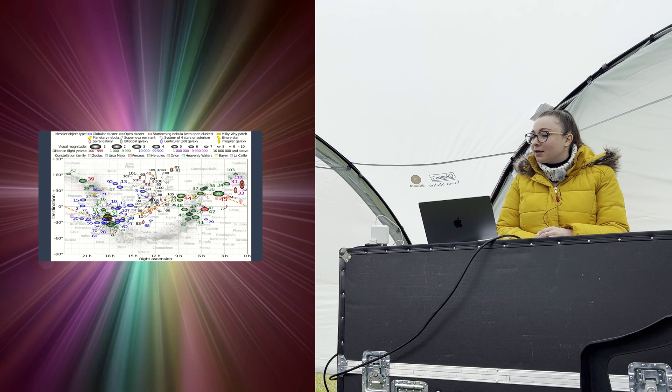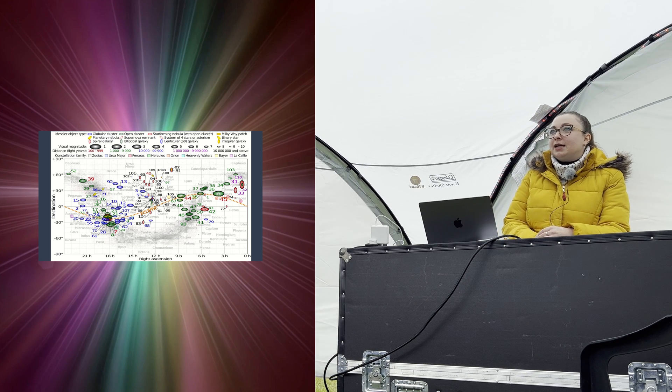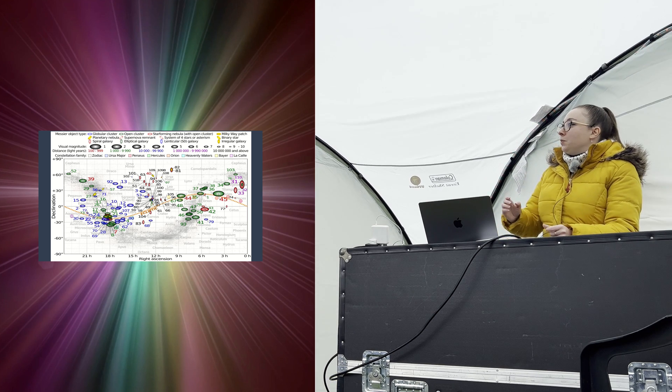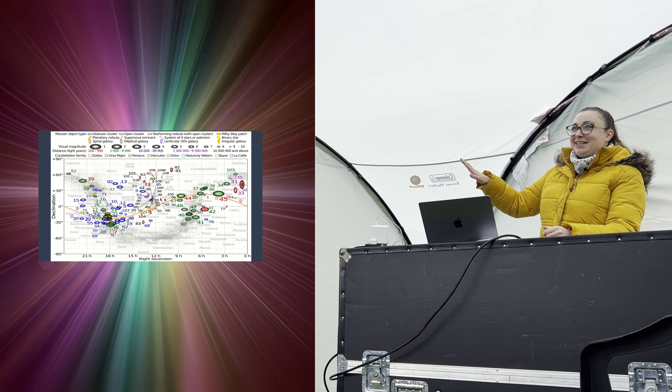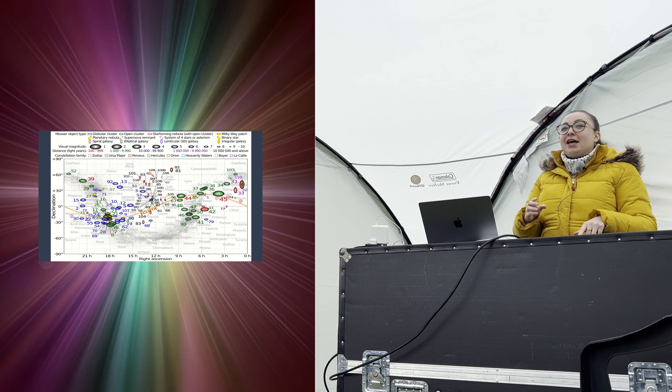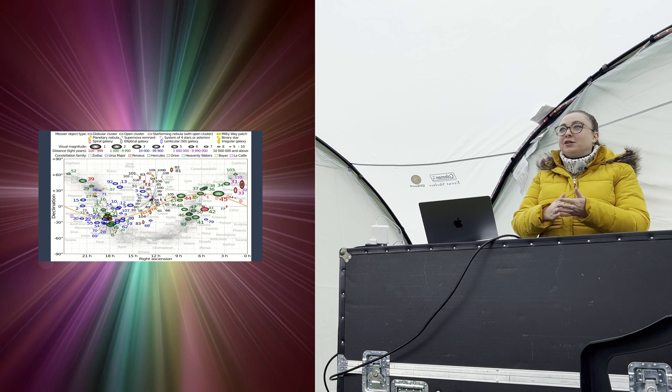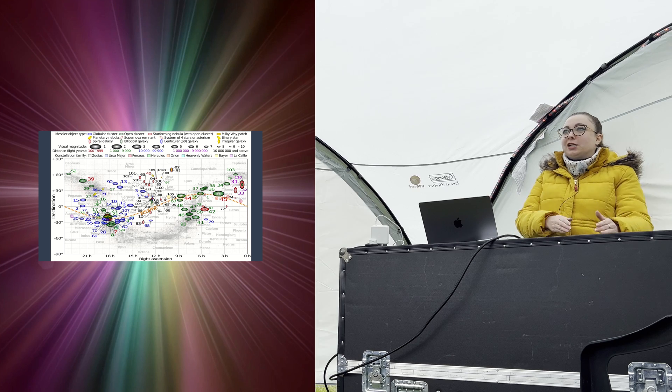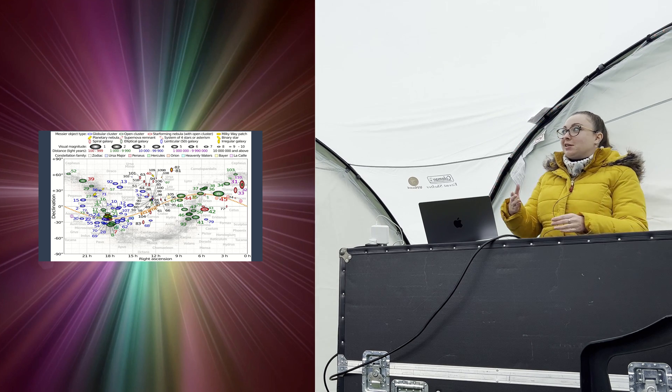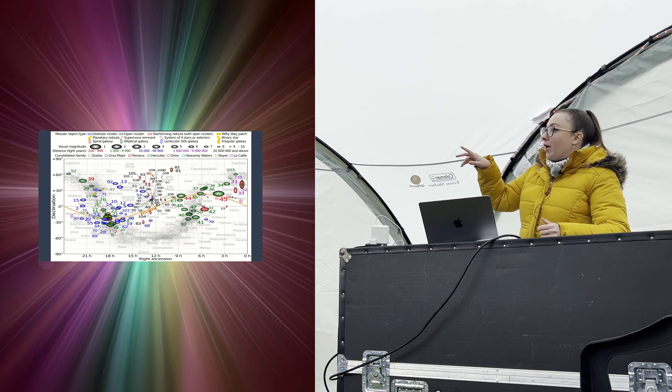Is there an order to do it, or do you just go one to 110? It's a really good question. So you have to go in the order that the constellations are setting, because the numerical order is just Messier over years of observing. He was like, right, that's another one. There's not really any logic to the numerical order. It's just the order he discovered them in.